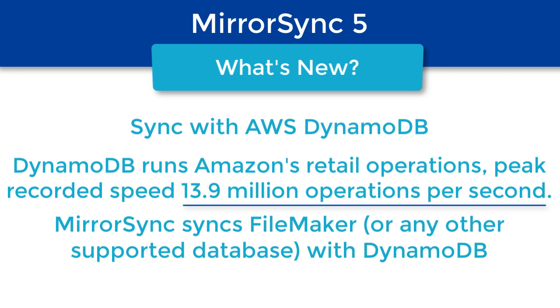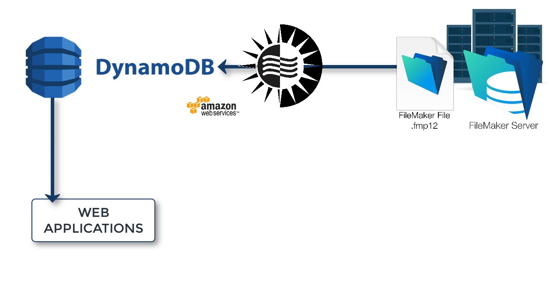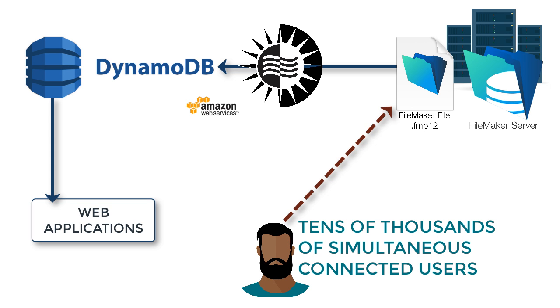How do they suddenly handle a million people? They had 13.9 million operations per second — not during the day, not over a month, but per second. Nothing comes close to that. For FileMaker, you measure that in hundreds. FileMaker is fast for a lot of things, but we're talking like half the planet shopping on Amazon simultaneously. That's not the world of FileMaker. But MirrorSync lets you basically create web applications that can have thousands, tens of thousands, millions of simultaneous connected users — which you could never do natively in FileMaker — by syncing that data up to DynamoDB.